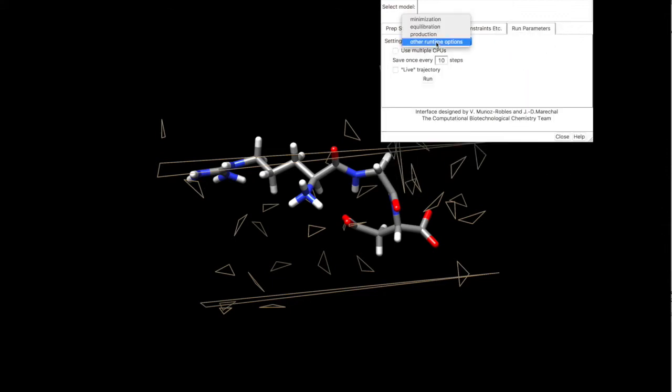Once we are ready with this we can select other runtime options. We can use multiple CPUs, and yes, I will use that. And you can select live trajectory, so it will be showing you all the steps, but this slows down the actual computation, so I will keep this disabled.